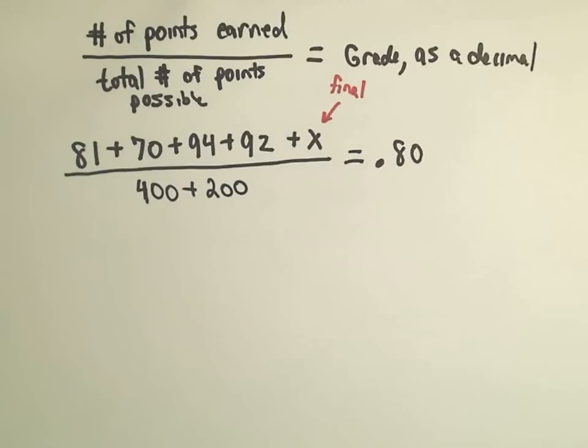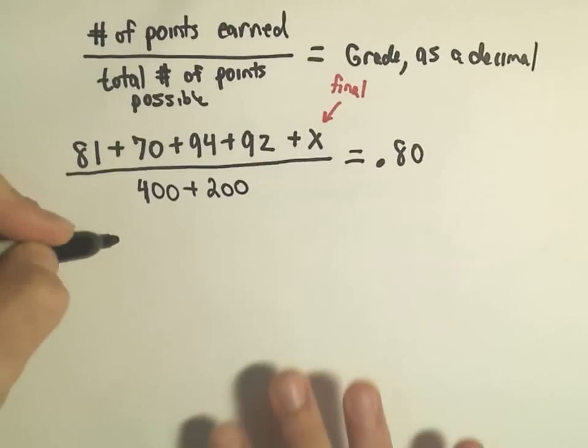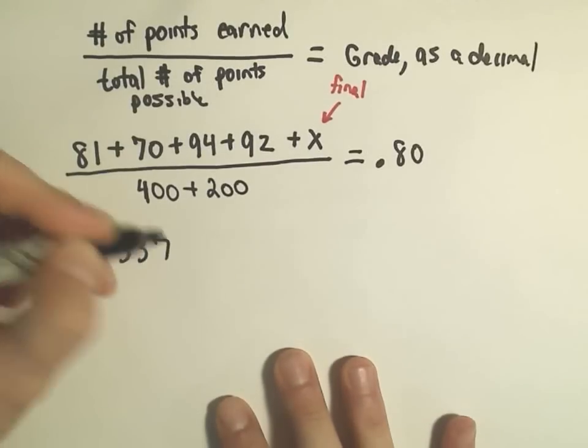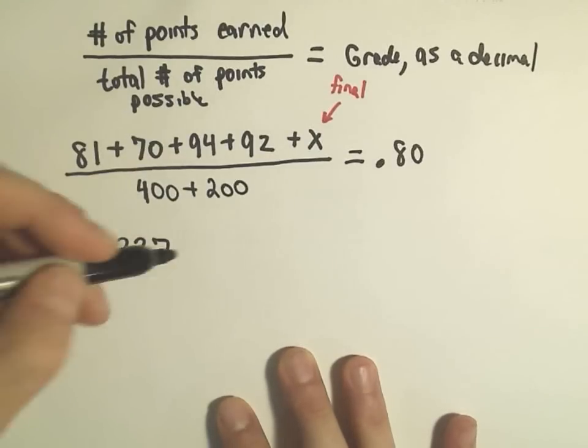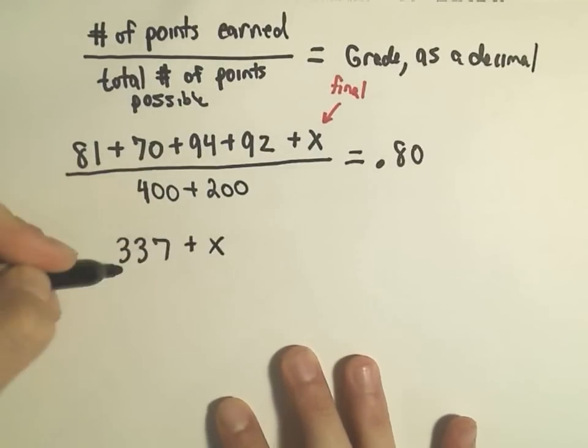So let's see, if we do the arithmetic in the numerator, I'm going to be lazy here and use a calculator. So 81 and 70 and 94 and 92. I'm getting that those first four numbers add up to 337. Again, plus x.